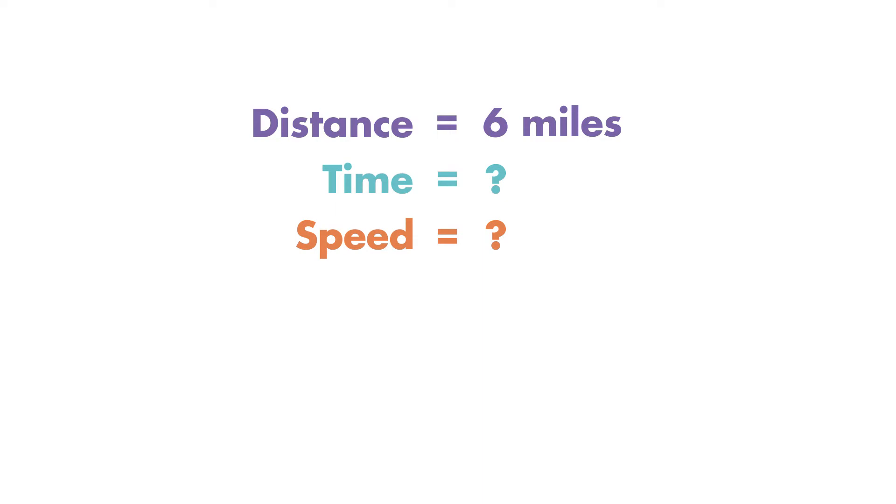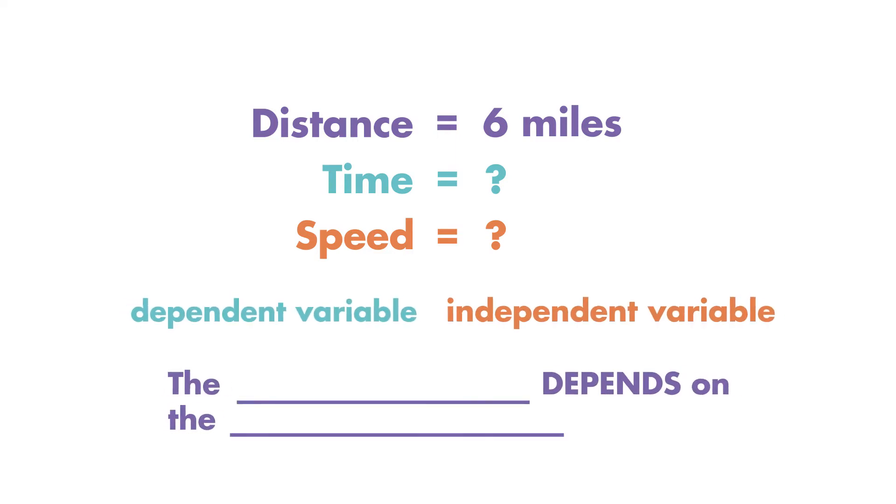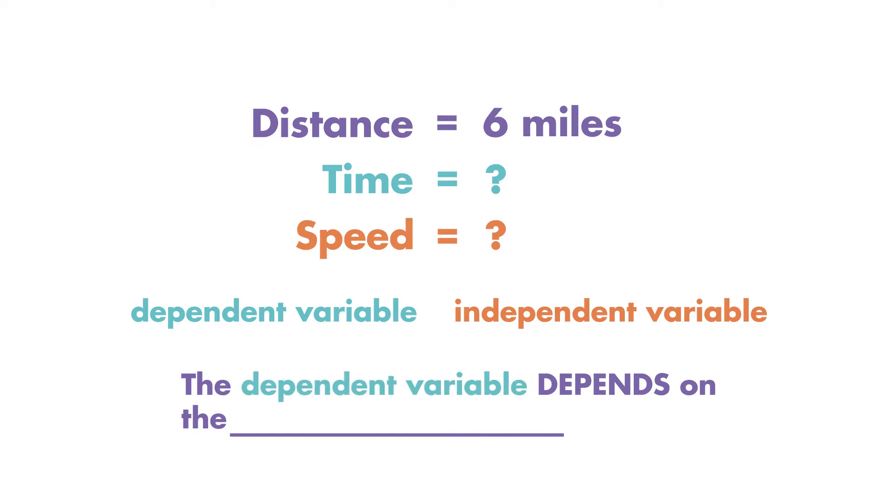Variables are values that can change. To find which variable is dependent and which is independent, remember that the dependent variable depends on the independent variable.